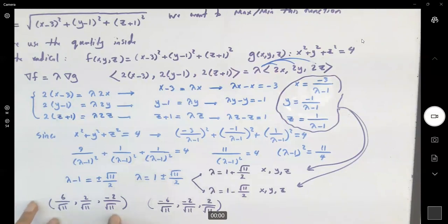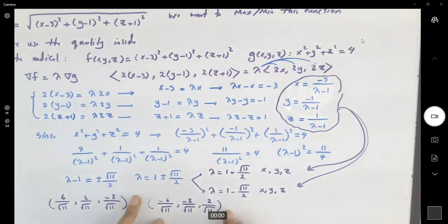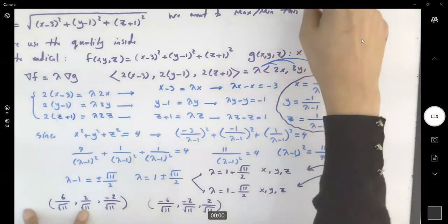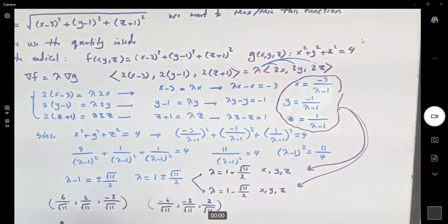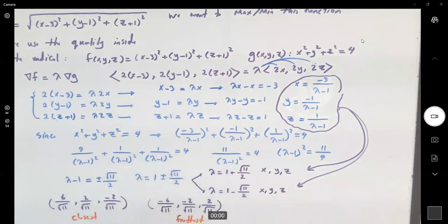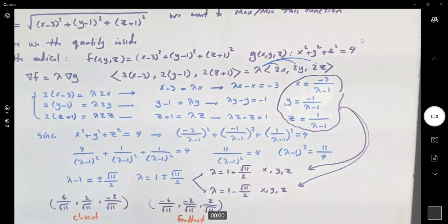The closest distance is from the first point, and the farthest distance is from the second point. It's not very hard to visualize this — the first point gives the closest distance to the given point, and the second gives the farthest. This is another application of Lagrange multipliers in finding distances.